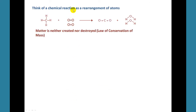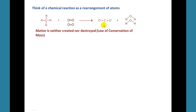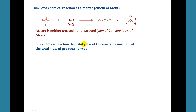Let's get back to chemical reactions. We can think of a chemical reaction as a rearrangement of atoms. On the reactant side, you have so many oxygen atoms, carbon atoms, and hydrogen atoms — and the products can only contain those same atoms. That's because, according to the law of conservation of mass, matter is neither created nor destroyed. Atoms are not going to appear on one side, and they don't just disappear. In a chemical reaction, the total mass of the reactants must equal the total mass of products formed.